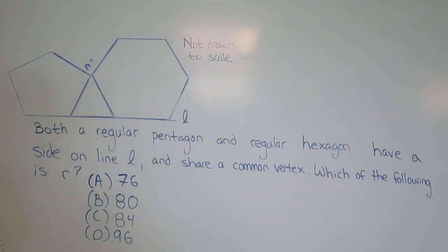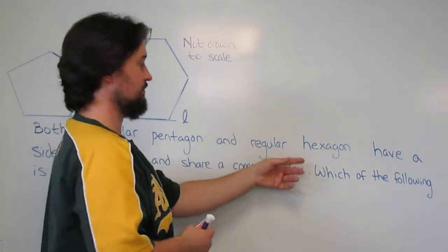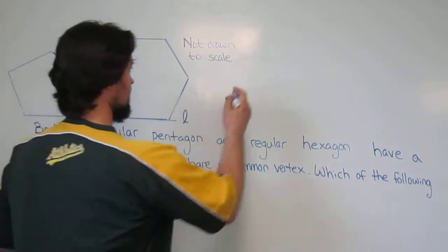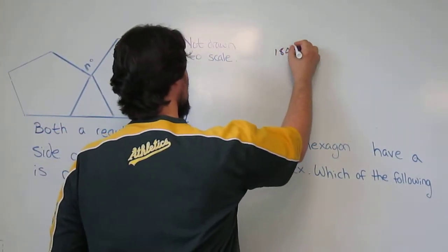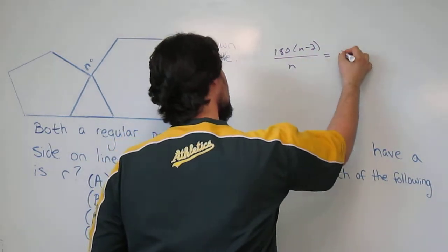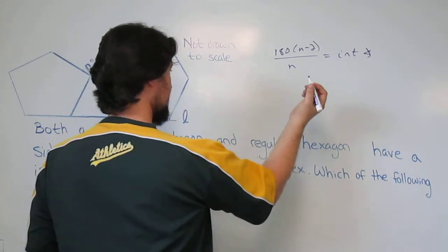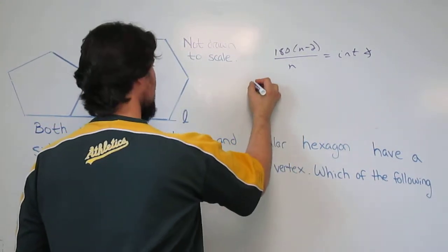Alright, time to find the interior angle measures for a regular 5-gon and for a regular 6-gon. The measure of each interior angle for a regular polygon, doing it twice.